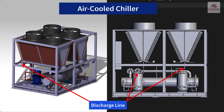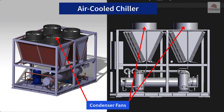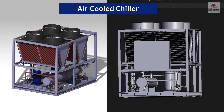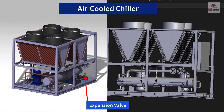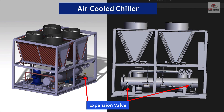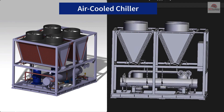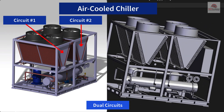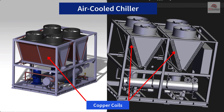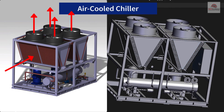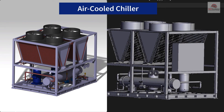From the compressor, the hot gas discharge goes into the air-cooled condenser coils, with fans on top. The unit has a dual circuit design with two separate circuits, each having its own compressor and expansion valve to control capacity. The condenser coils are copper with aluminum fins. Air is drawn in from outdoors over the coils, and the heat is blown straight up and out. This unit is located outdoors.